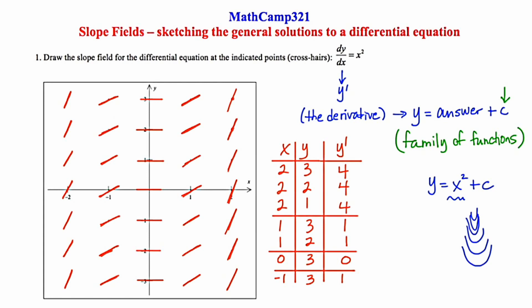So that's our first example of drawing a slope field. You're essentially taking all the points on the graph, making an XY chart for organization, and plugging those points into the derivative. Let's try another example.